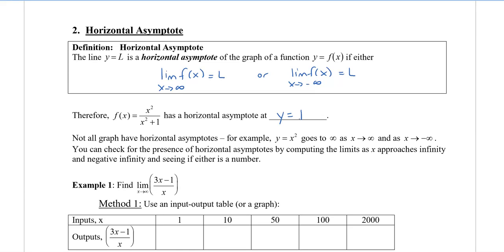Not all graphs have horizontal asymptotes. For example, y equals x squared, the parabola, goes to infinity as x approaches infinity or negative infinity. You can check for the presence of horizontal asymptotes by computing the limits as x approaches infinity and negative infinity, and seeing if either is a number.